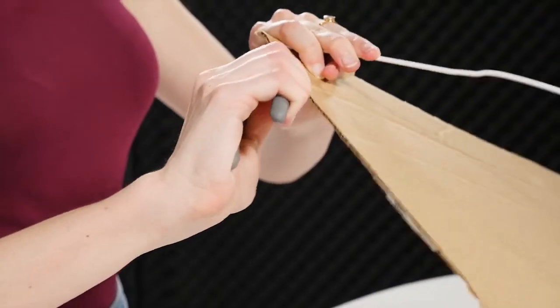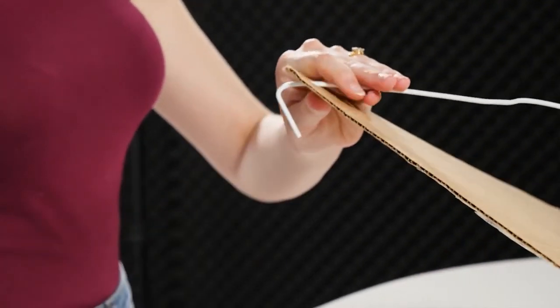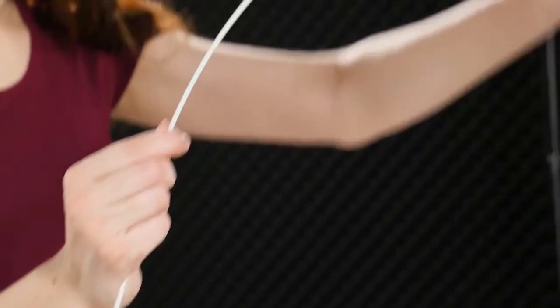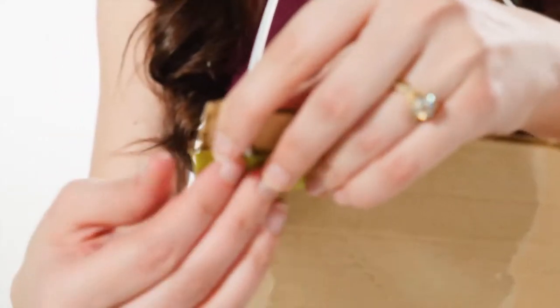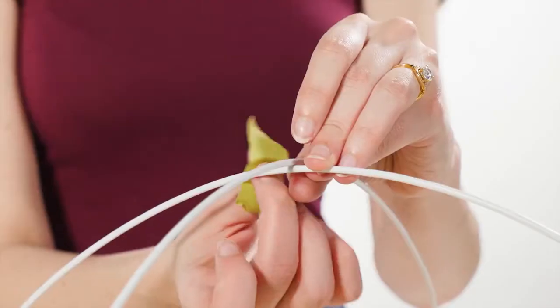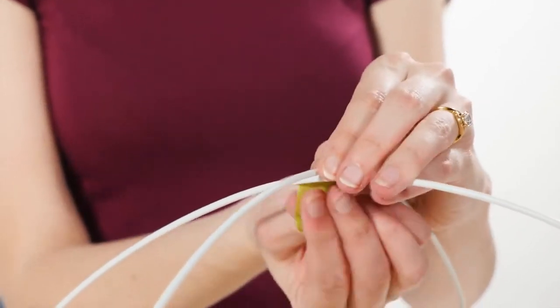Using your pliers, bend the end of the wire at a 90 degree angle and use a few pieces of masking tape to keep it secure underneath. Do the same thing with the other end of your wire on the opposite corner. Once you've completed this, you should have an arch going across your piece of cardboard.